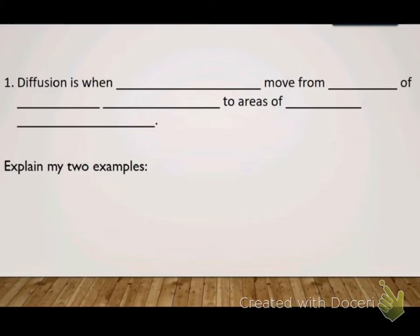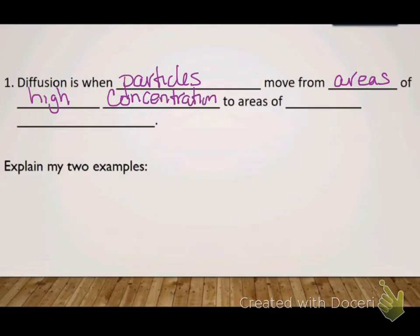First we need to define some terms and then talk about how things pass through the cell membrane. They pass through there in a process called diffusion. Diffusion is when particles move from areas of high concentration to areas of lower concentration.